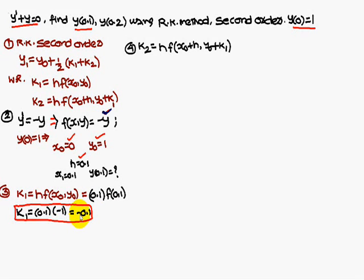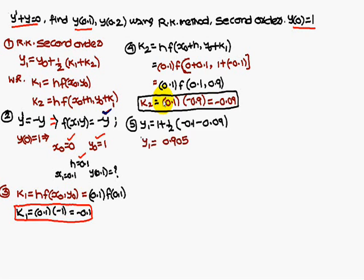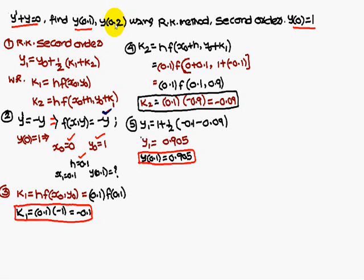So k1 = -0.1. Now k2 = h · f(x0 + h, y0 + k1) = 0.1 · f(0 + 0.1, 1 + (-0.1)) = 0.1 · f(0.1, 0.9), which simplifies to k2 = -0.09. Substituting into the RK2 formula: y1 = 1 + ((-0.1) + (-0.09)) / 2 = 0.905. Therefore y(0.1) = 0.905.